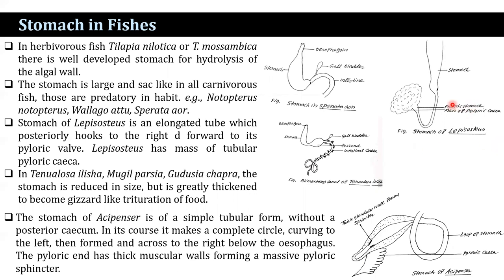The stomach of Lepisosteus is an elongated tube-like structure which posteriorly forms a hook to the right, forwarded to its pyloric valve. Lepisosteus has a massive tubular pyloric cecum. In Tenualosa ilisha, Mugil parsia, and Gudusia chapra, the stomach is reduced in size but greatly thickened to become gizzard-like due to trituration of food. The stomach of Acipenser is not a simple tubular form but makes a complete circle, curving to the left then across to the right below the esophagus. The pyloric end has thicker muscular walls forming a massive pyloric sphincter.